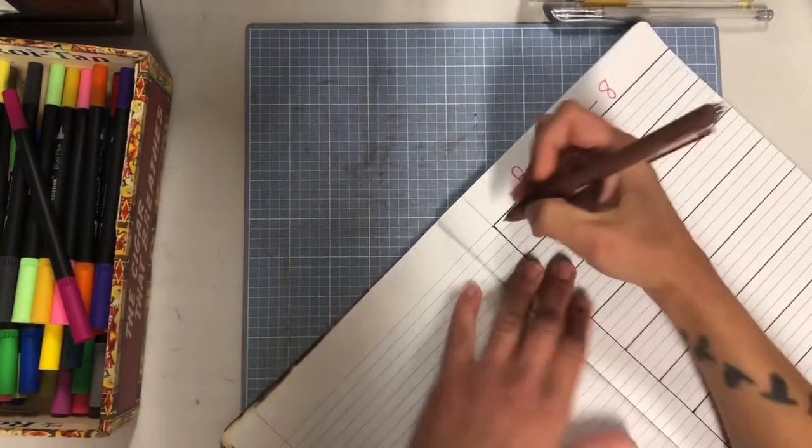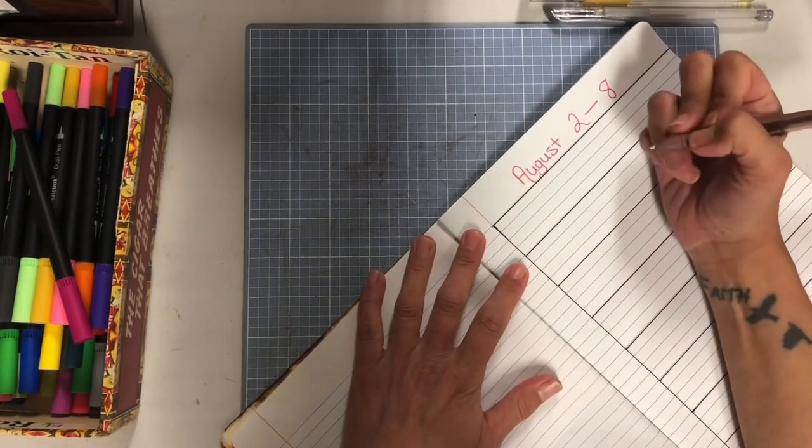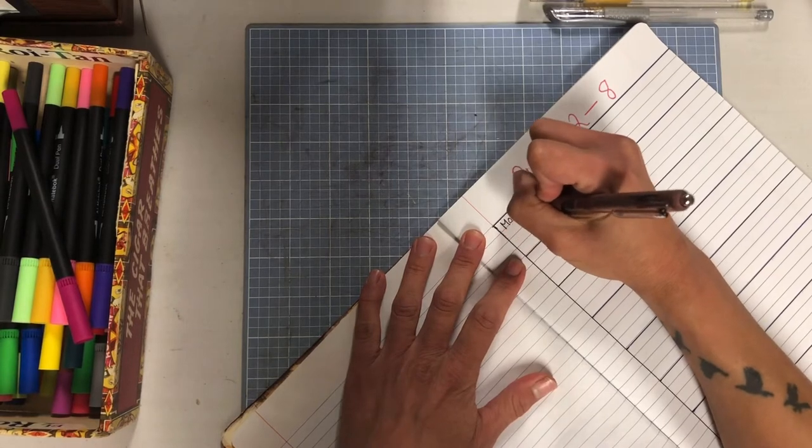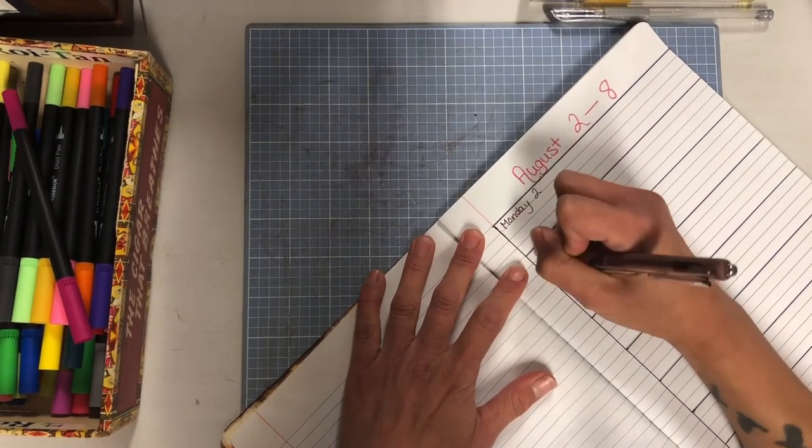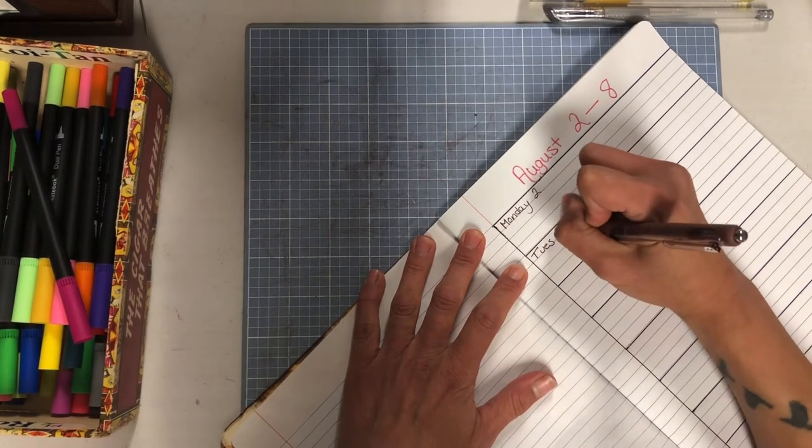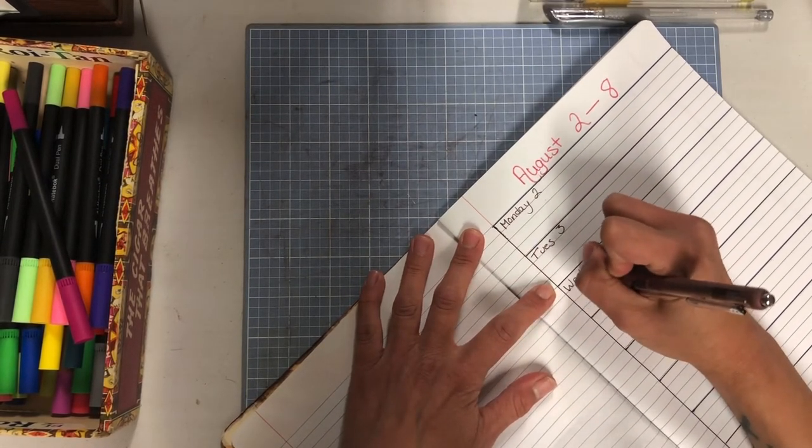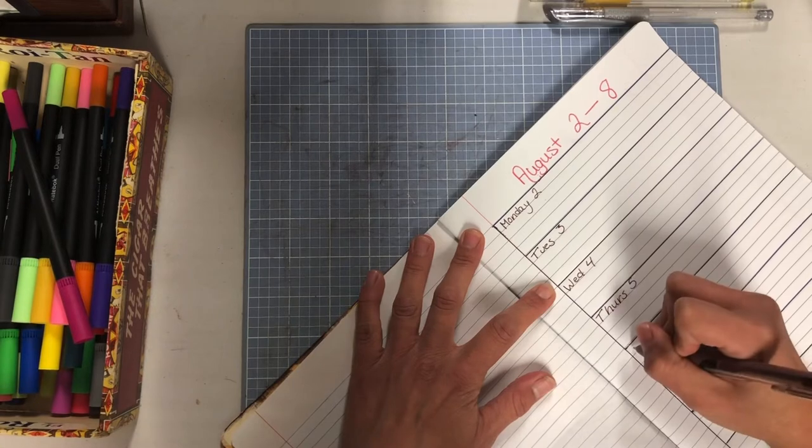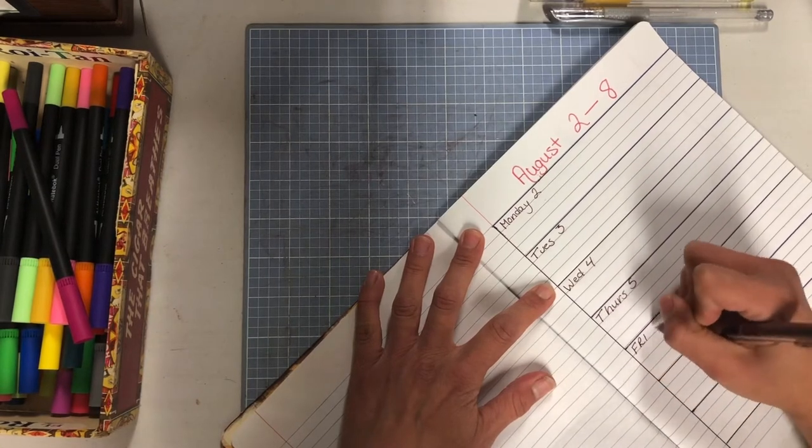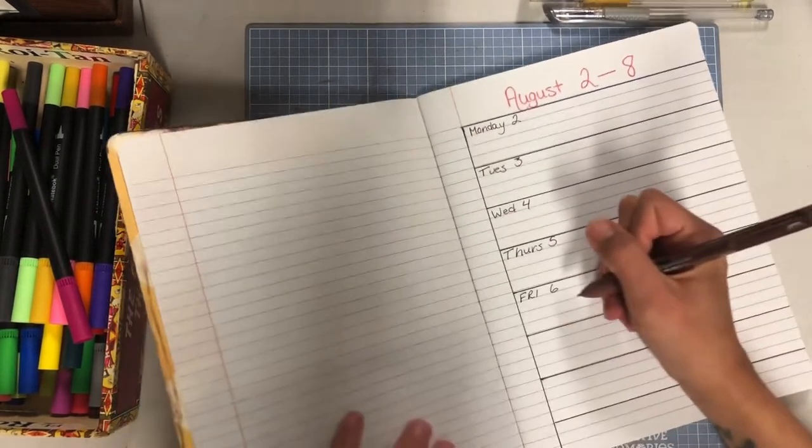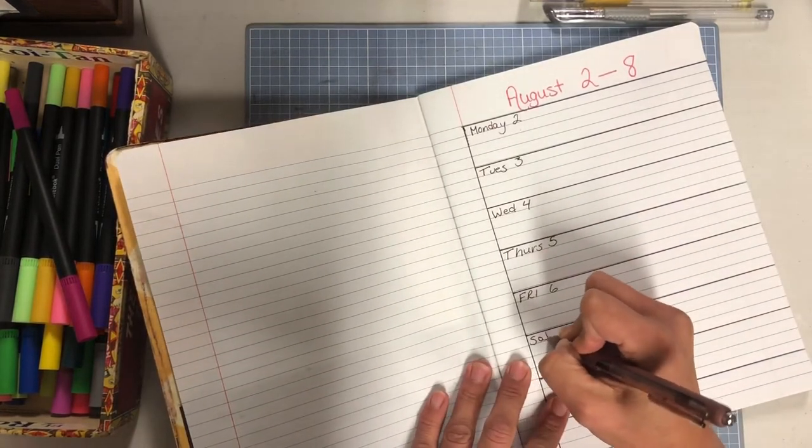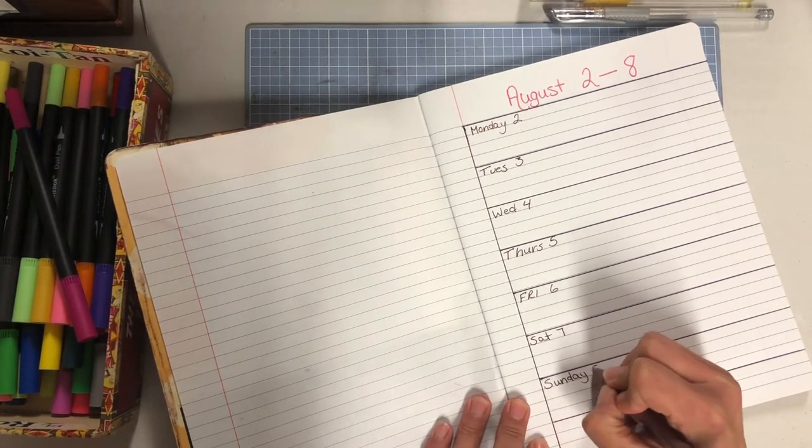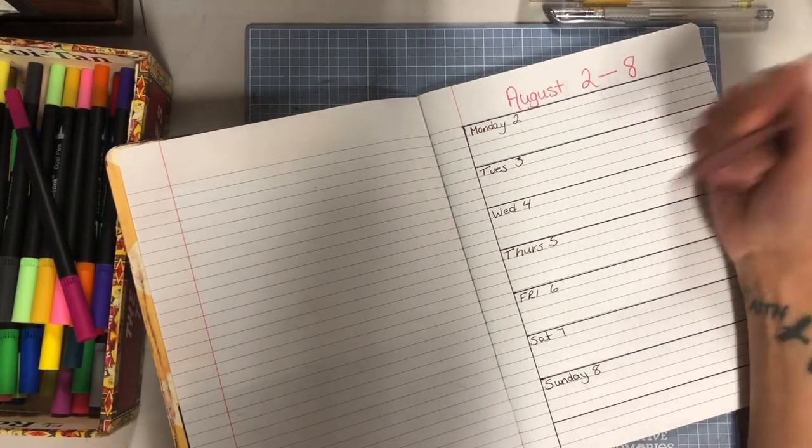So you can pick any color to do that. I am going to use one of my gel pens. So we're into August, and this is the second, we're on a Monday I believe, hopefully that's right. Then I usually just take a regular, this is one of my smooth tip gel writing pens. So I'll go Monday, Wednesday, Thursday, Friday six, Saturday seven, Sunday eight.